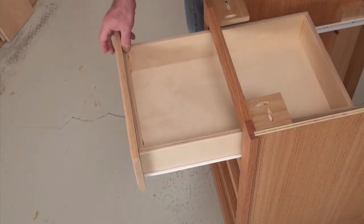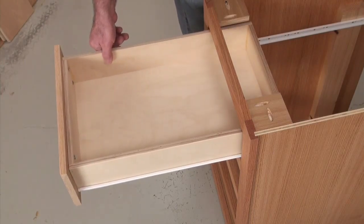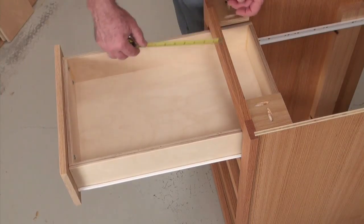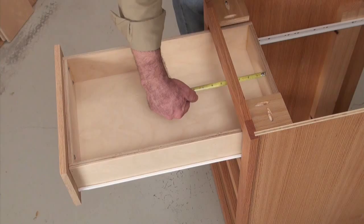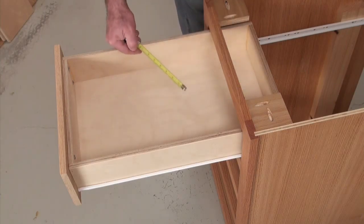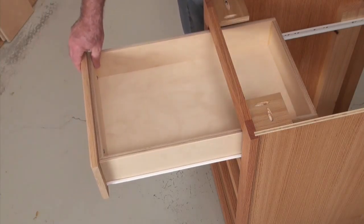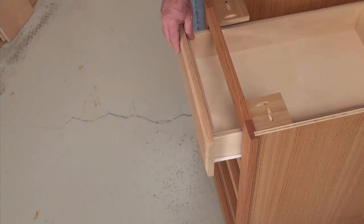More economical slides are called single extension, and they permit only a portion of the drawer box to move out of the case. Two-thirds or three-quarters are typical extension ratios. The portion of the box that remains inside the cabinet is called the extension loss.